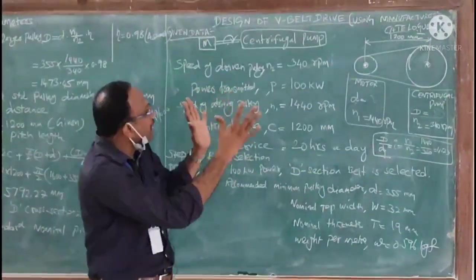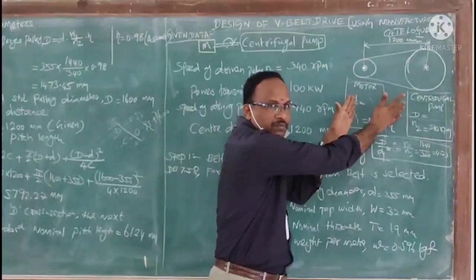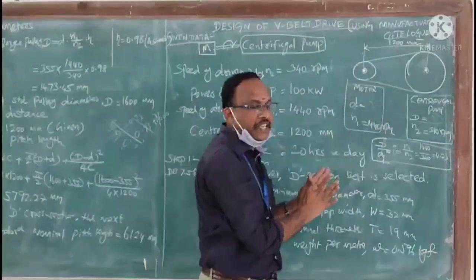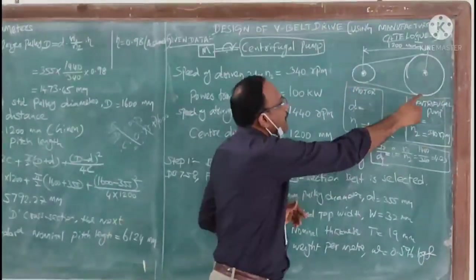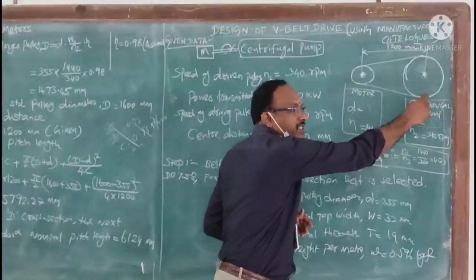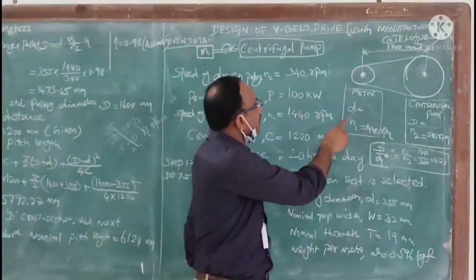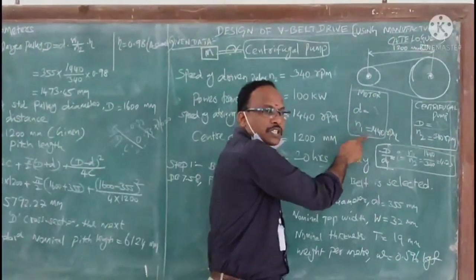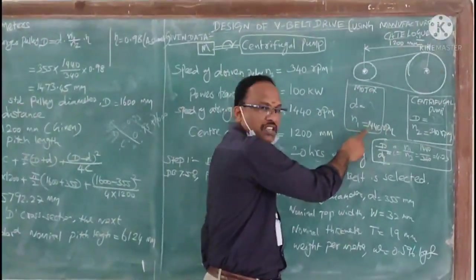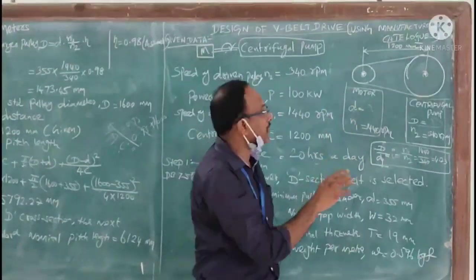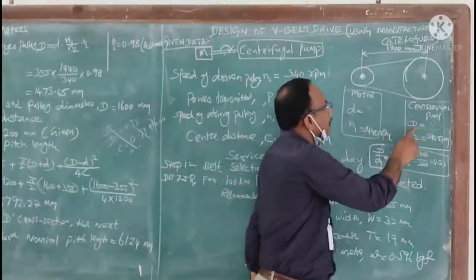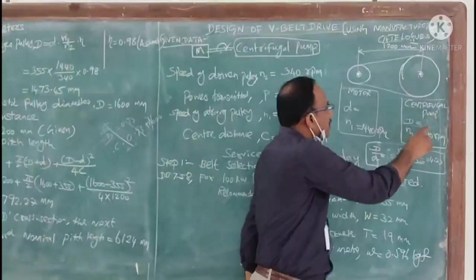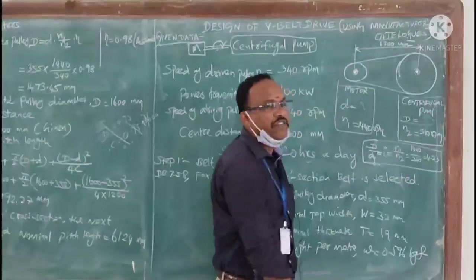Based on these things, we are going to draw roughly this particular V-belt drive diagram. Here this is the motor and the larger pulley is the centrifugal pump. Here the small d is taken as diameter of driving pulley and N1 is speed of driving pulley. D is not provided.